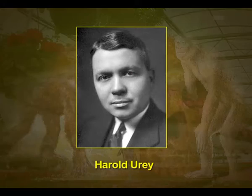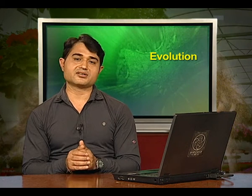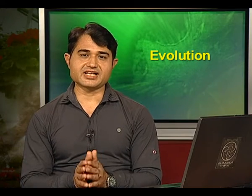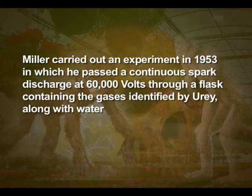In 1952, Harold Urey tried to calculate the chemical constituents of the atmosphere of the early earth. He based his calculations on the widely held view that the early atmosphere was a reducing one, and concluded that the main constituents were methane, ammonia, hydrogen gas and water. He suggested that his student Stanley Miller should do an experiment attempting to synthesize organic compounds in such an atmosphere. Miller carried out an experiment in 1953 in which he passed a continuous spark discharge at 60,000 volts through a flask containing the gases identified by Urey along with water.